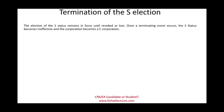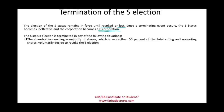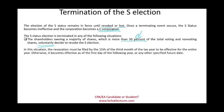Termination of S status: the S election remains in force until it is revoked or lost. Once terminated, the corporation becomes a C corporation subject to double taxation. Voluntary revocation requires consent from shareholders owning more than 50% — unlike the original election which required 100% consent. To be effective for the entire current year, the revocation must be filed by March 15th; otherwise it takes effect the following year.